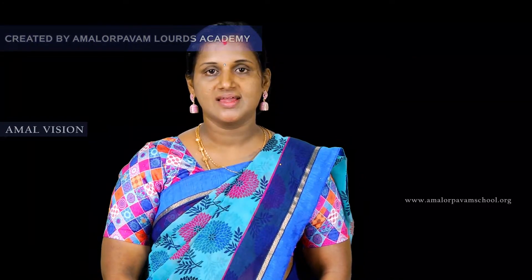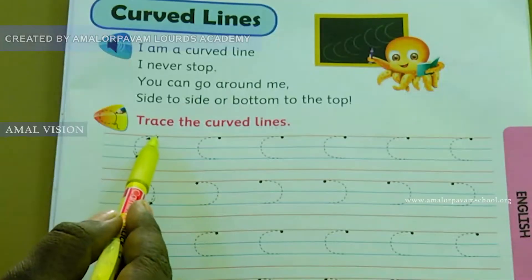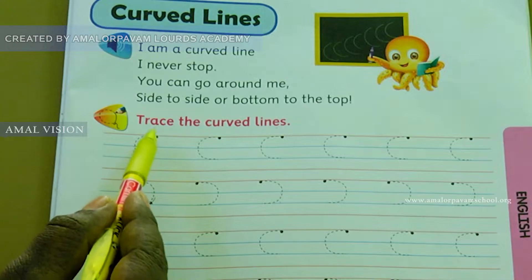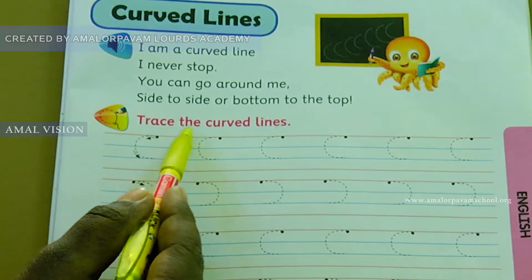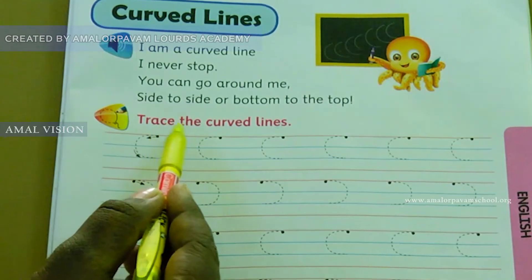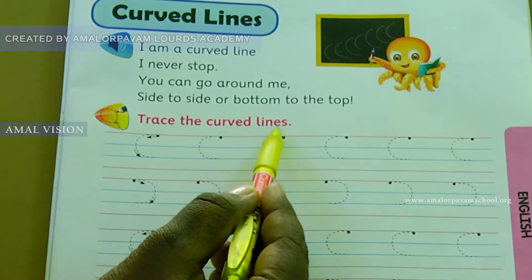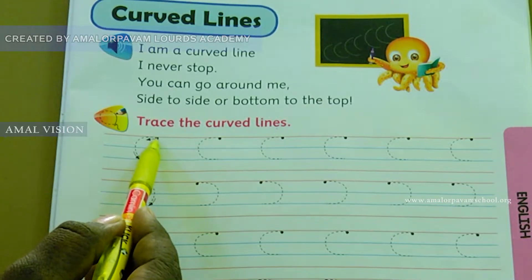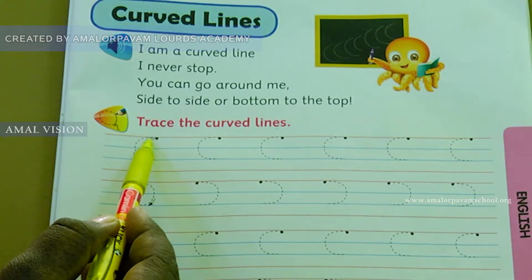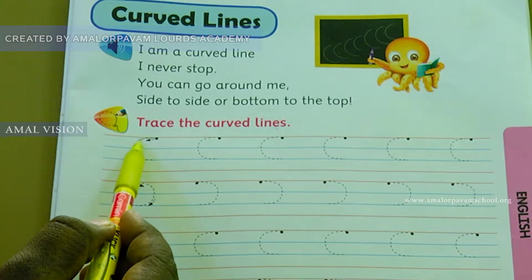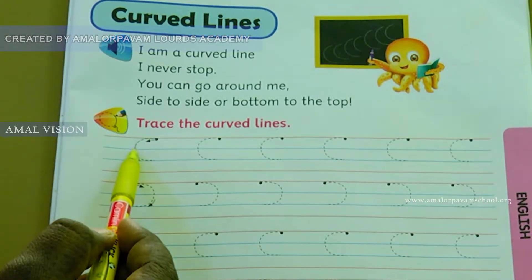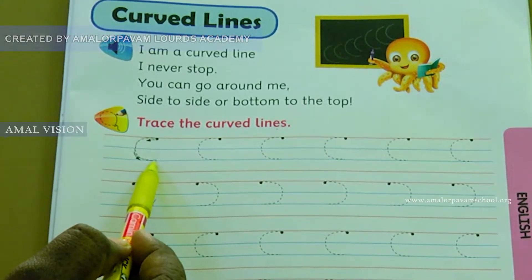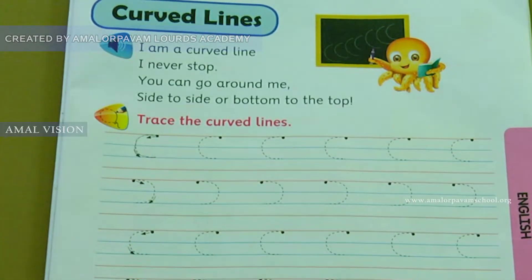Now, let's complete our book exercise, page number 11. Come on, let's complete our book activity. Now, keep your finger in the heading. Now, keep your pencil on the dot. Move your pencil towards the direction of the arrow. Come down. Touched up blue line. Bend a little. This is right curve.